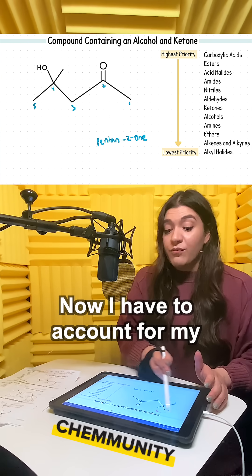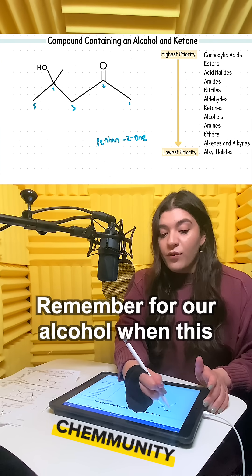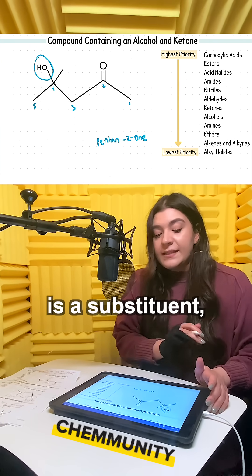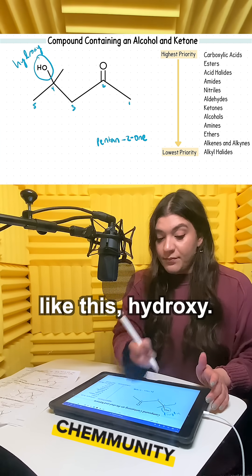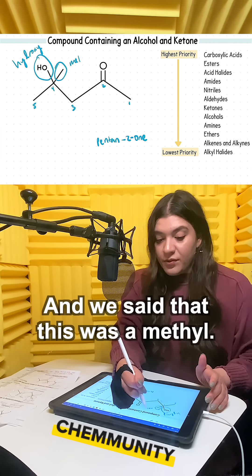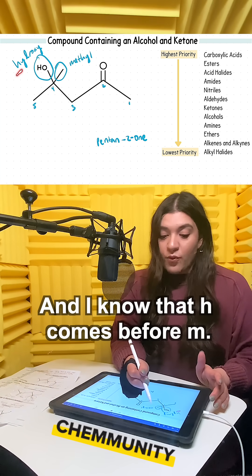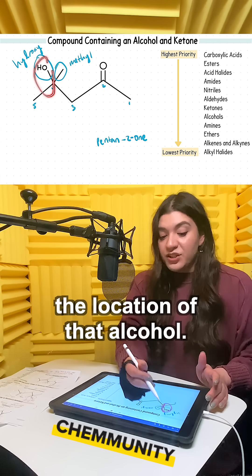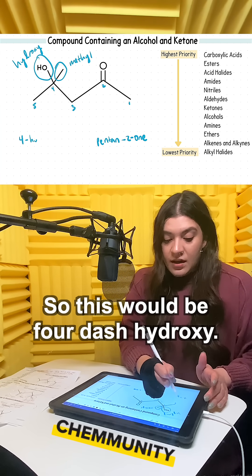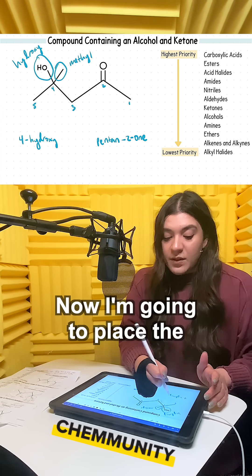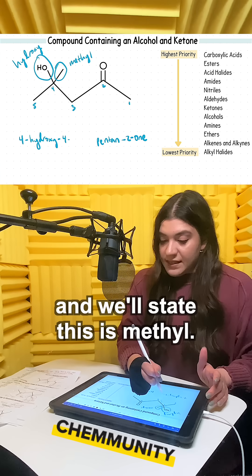Now I have to account for my substituents, which is the alcohol and the methyl group at carbon four. For our alcohol, when this is a substituent, that prefix is going to be written out as hydroxy. And we said that this was a methyl. Now we want to place these in alphabetical order. H comes before M, so I'm going to first place the location of that alcohol: 4-hydroxy. Then the methyl, also at 4: 4-methyl.